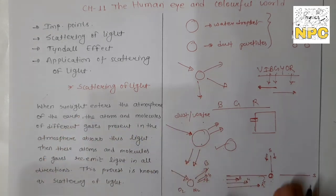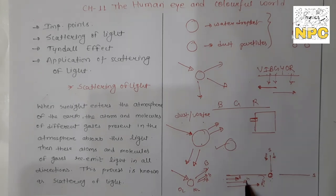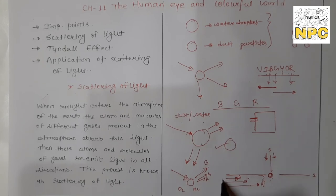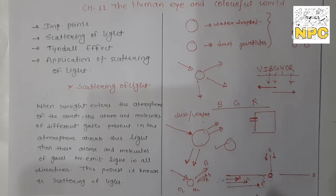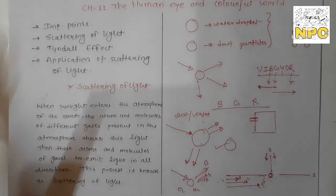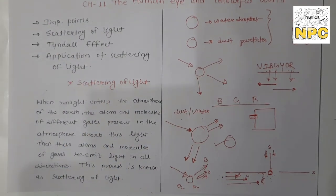At sunset and sunrise, considering blue, green, and red colors — blue color has the least wavelength so it gets scattered first, completely scattered before reaching you. Green color has a slightly larger wavelength than blue, so it also gets completely scattered before reaching you. Red color has the greatest wavelength, so it reaches you — that is why the sun appears reddish at sunset and sunrise. Red color is less scattered, travels longer distances, and reaches you easily.